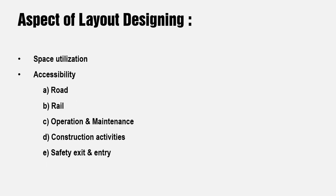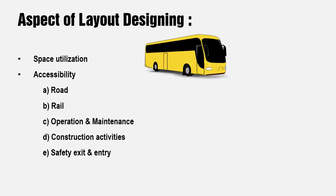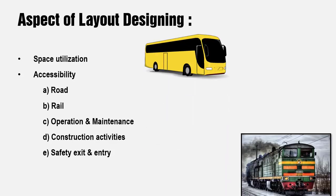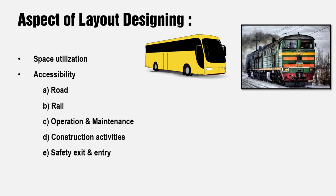Now I'll show you some of the aspects on which layout designs are generally made. The first and foremost is space utilization, which we have already seen through examples. The second important thing is accessibility, which has various sub-aspects. One is roads — we should have proper roads for vehicle transportation and rail transportation for taking goods. Finished products need to be transported, so rail tracks may need to be laid inside the plant, with separate space for local transportation and rail entry and exit.